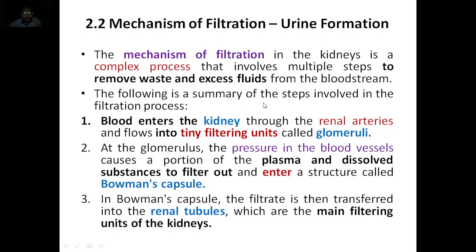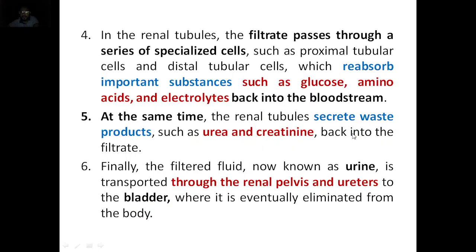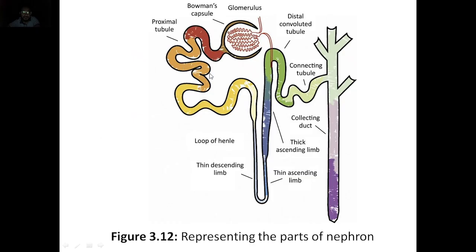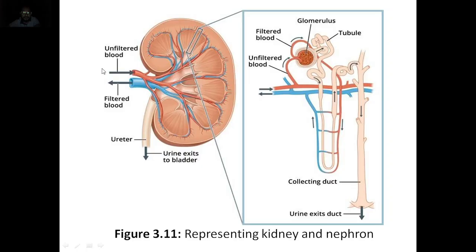There are six steps involved in the filtration process. First step: blood enters the kidney through the renal arteries and flows into tiny filtering units called glomeruli. Here this is the glomeruli. Unfiltered blood enters the kidney, which has 10 lakh nephrons. In one nephron, the blood enters to the glomeruli — this is where it goes.